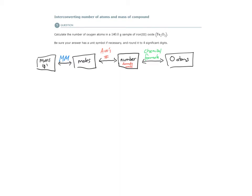So we have our mass. It's 140 grams of Fe2O3. Let's begin.